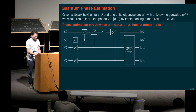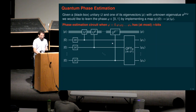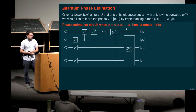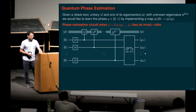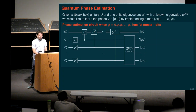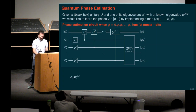At the end, we use the quantum Fourier transform over these n integers in Z_N, where capital N is two to the lowercase n. If we were lucky enough that the unknown phase was indeed an n-bit binary number, then we get back exactly these n bits. And as a bonus, our eigenstate will not get disturbed.